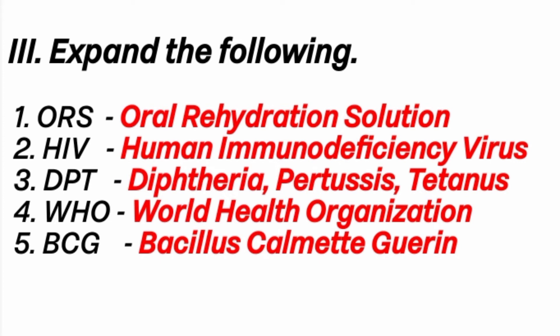3rd question: DPT, also known as triple antigen. Because this vaccine prevents three diseases: diphtheria, pertussis, and tetanus. That's why DPT covers those three diseases.